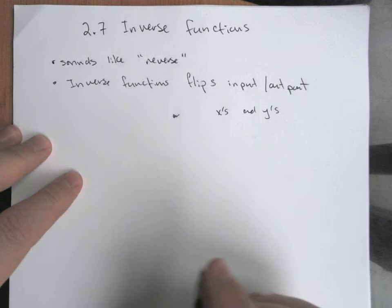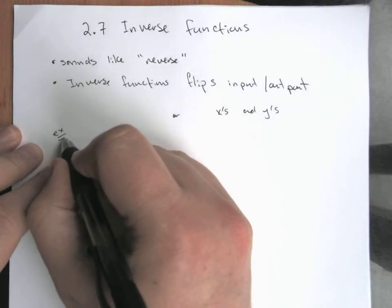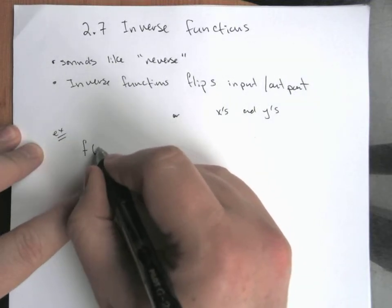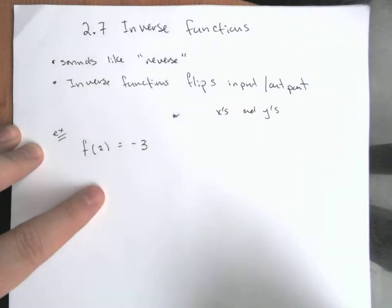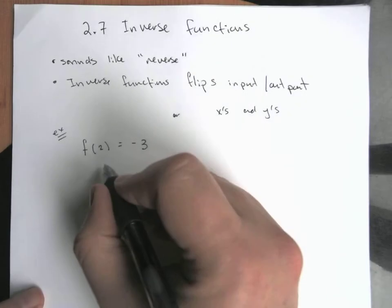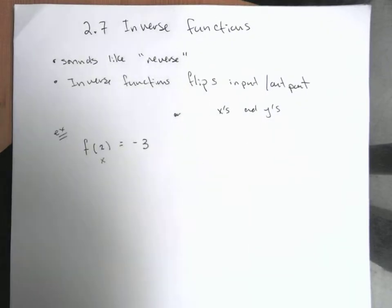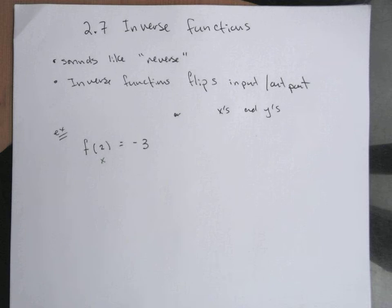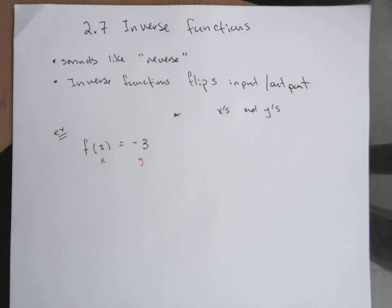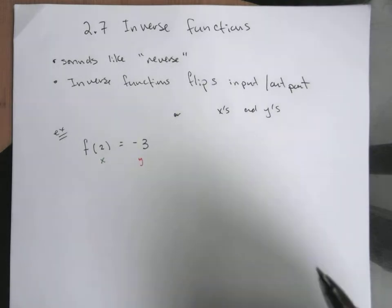For example, if I don't necessarily have a formula but I have f(2) equals negative 3, the idea here is my x value is 2, and the output, my y value, is minus 3.